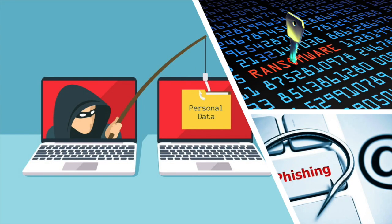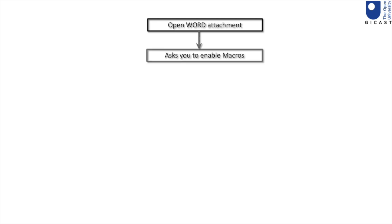A social housing provider in Norwich, England was hit with the Sordino-Kibi ransomware attack following a successful phishing attack. The overall impact is yet to be known. The modus operandi was as follows: all victims received a phishing email with a Microsoft Word document as an attachment. When opened, the malicious document claimed it was created in an earlier version of Microsoft Office and asked victims to enable the macros embedded in the content, which then launches a code hidden in those macros.